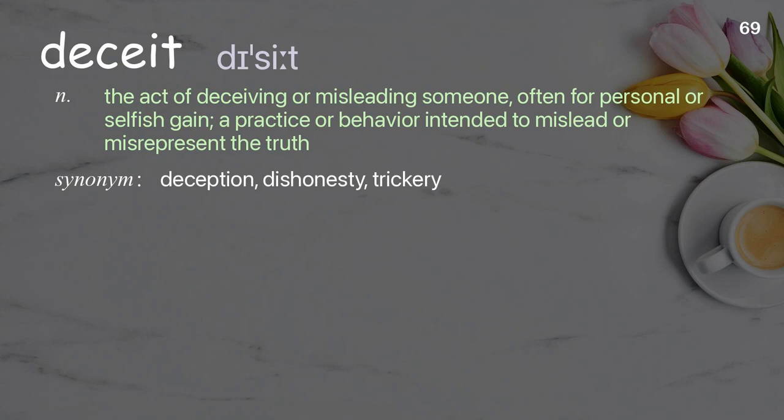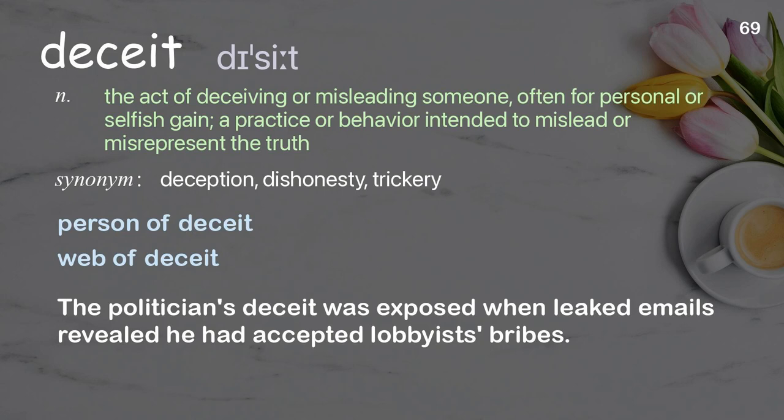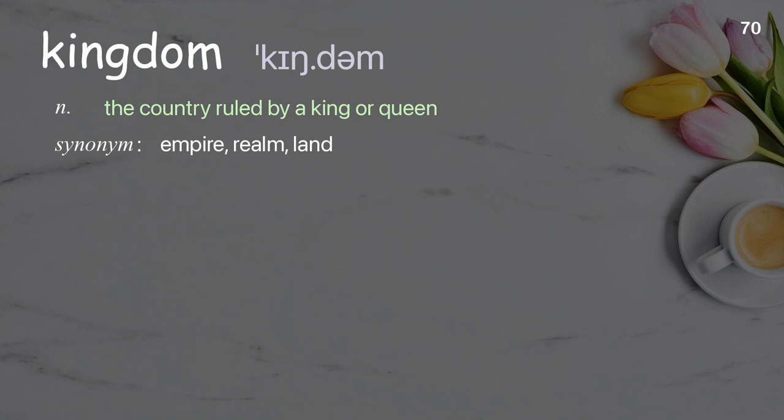Deceit: The act of deceiving or misleading someone, often for personal or selfish gain; a practice or behavior intended to mislead or misrepresent the truth. Examples: person of deceit, web of deceit. The politician's deceit was exposed when leaked emails revealed he had accepted lobbyists' bribes.